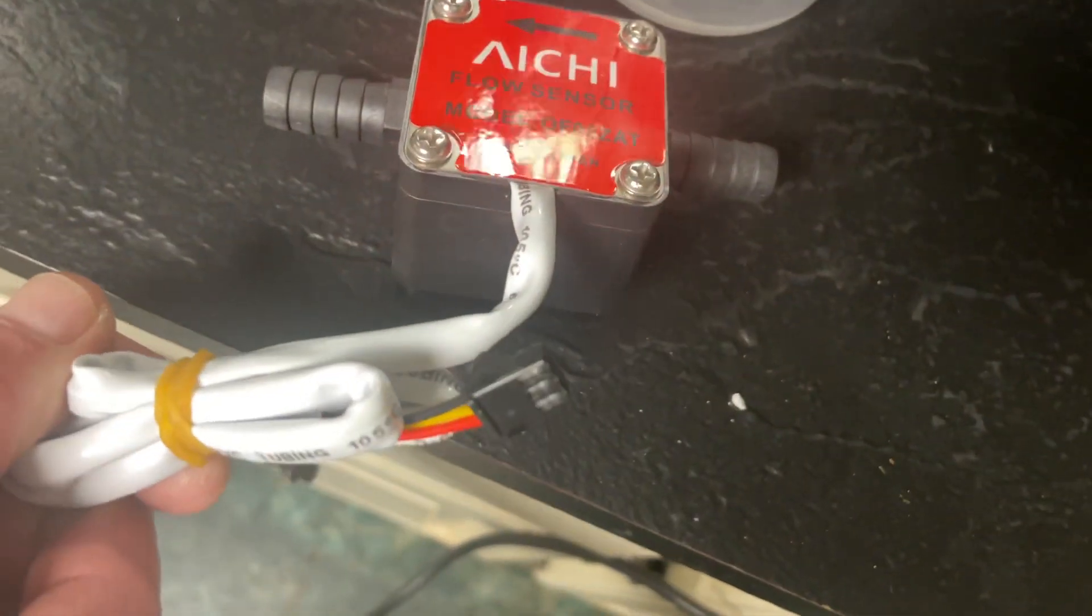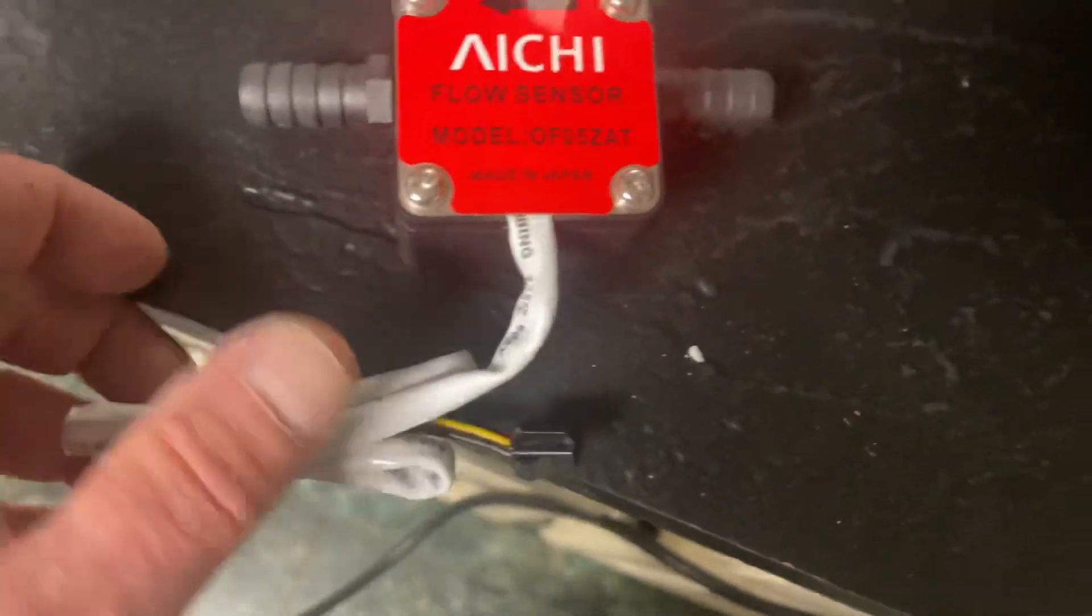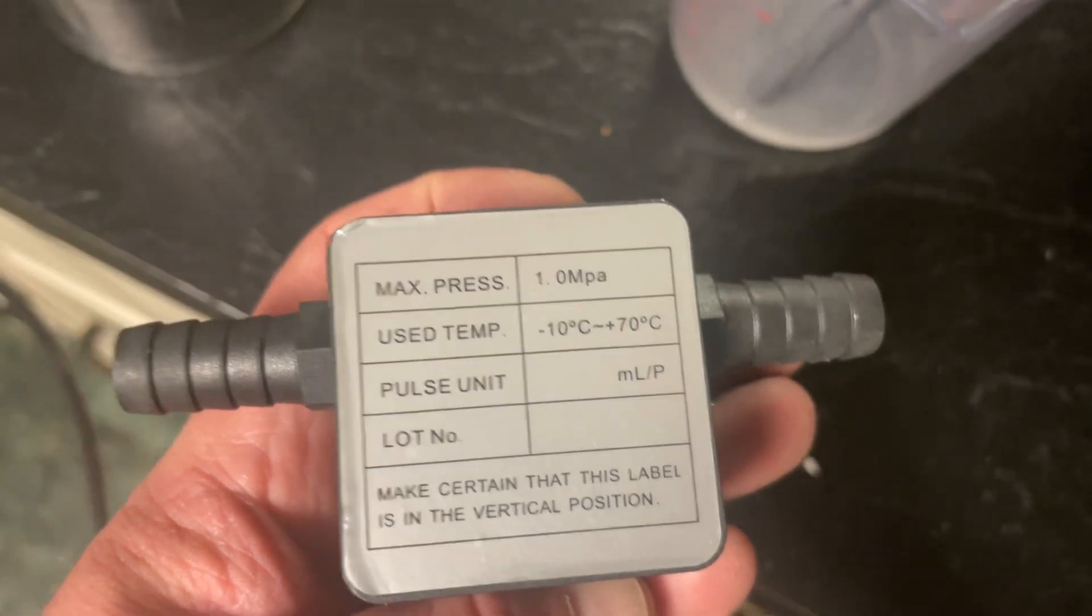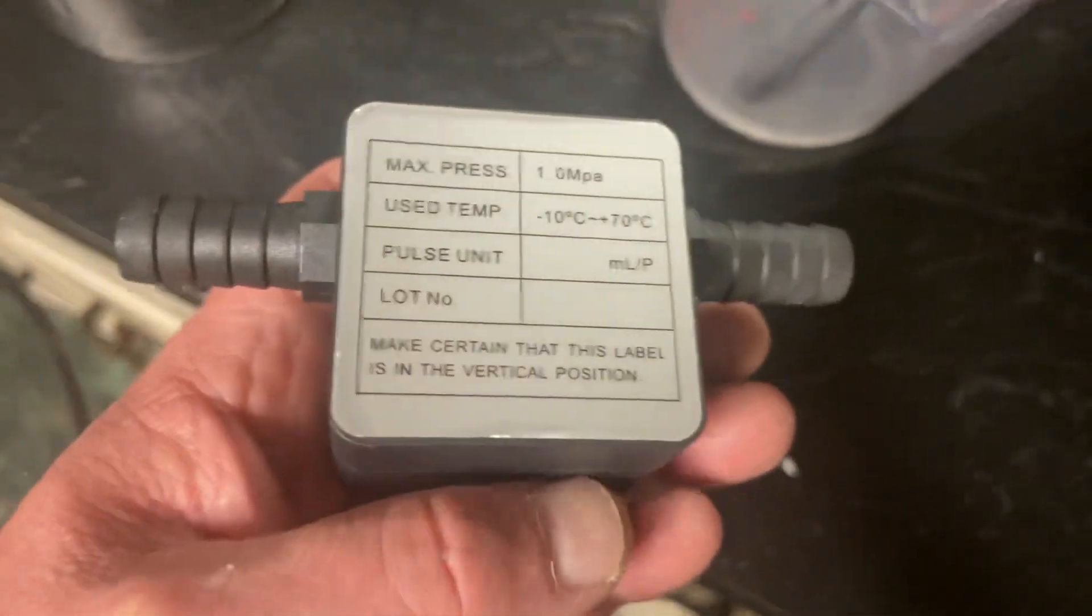This is basically a digital output, 5 volts supply, the ground and a signal, a pulse. This will give you one pulse for every 4.29 milliliters. So depending on your flow rate, you will get more or less pulses per minute or in a 10 minute period.